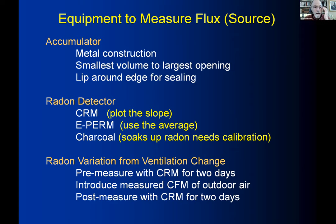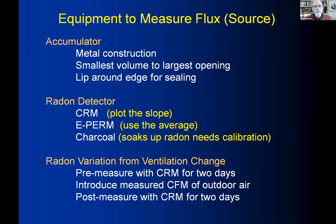The key measurement approach was a ventilation variation test: pre-measure radon for two days, then introduce a precisely measured amount of outdoor air, and measure the radon change. This tells you how much radon is coming from the concrete, what the initial ventilation rate is, and — most importantly — how much additional air is needed to reduce radon levels to acceptable levels.